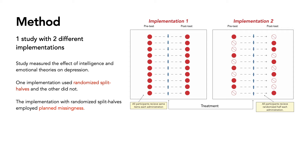So in the graphic, for example, a participant would have a response for item one in wave one, the pre-test, but not in the second version. And we would randomize that for each participant.